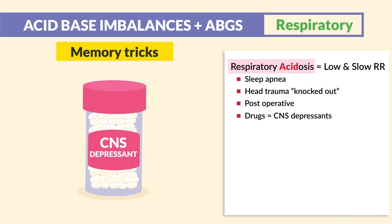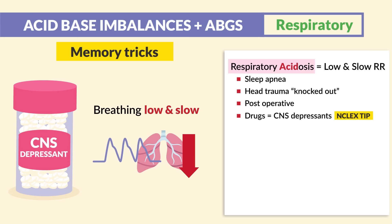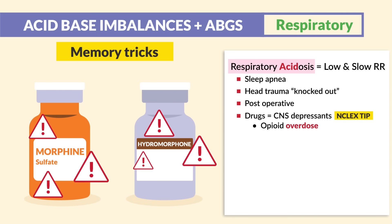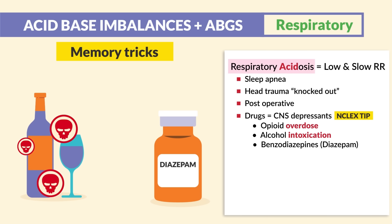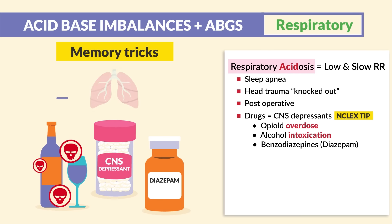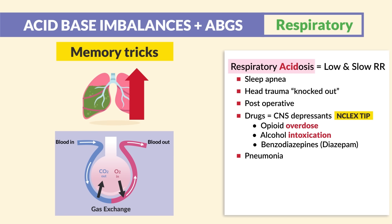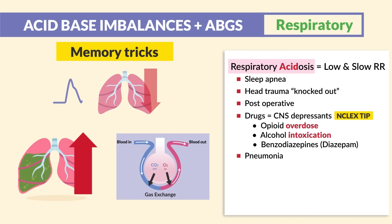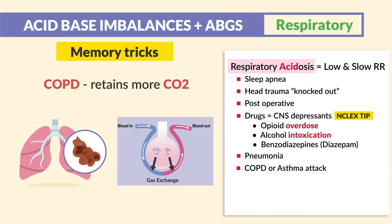We can also have impaired gas exchange from, say, pneumonia, where thick mucus buildup inside the lungs means CO2 is retained in the body, making the blood more acidic. COPD and asthma attacks — do we have good gas exchange? No. So CO2 is retained. COPD retains more CO2, putting the body in respiratory acidosis.